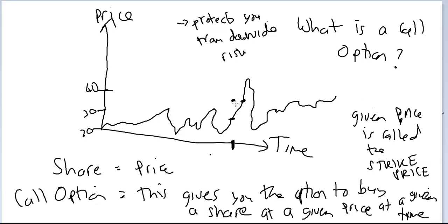Call options give you downside protection. The other one is called a put option. So there you're short the share, so you have the right to sell a share at the strike price. And so you'd exercise it if the share price was lower than your strike price. So if you think the share is going to go down, you'd buy a put.